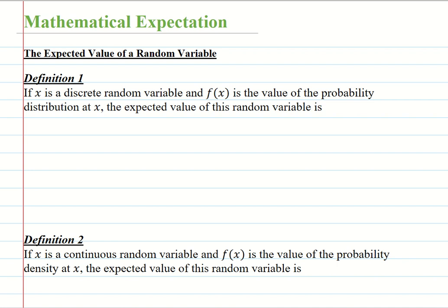The expectation of a discrete random variable X, denoted as E[X], which is the measure of the center of the distribution variable, is defined by summation from i equals 1 to n of xi times f(xi), where f(xi) is the probability distribution at every point of x. This is the expectation of a discrete random variable X.